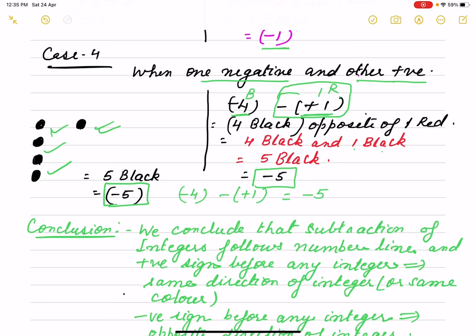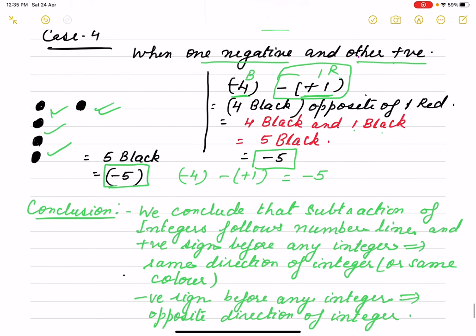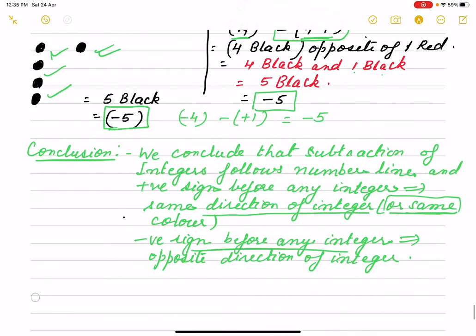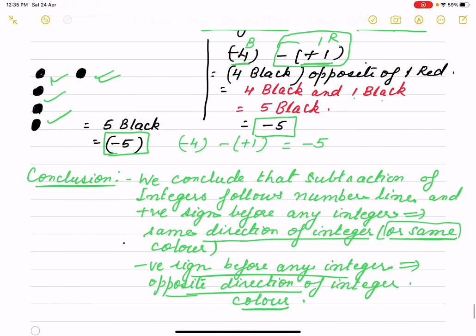So this way we conclude that number line of positive sign before any integers is same direction or same color. Also we can say because here direction will represent by the same color. Negative sign before any integer means we are going opposite direction or we are taking opposite color of that integer. So this way we do by activity method. You can take square papers also. You can represent 1 or minus 1. You can take red color or black color. You can take 2 any opposite colors.